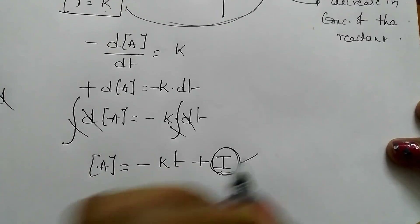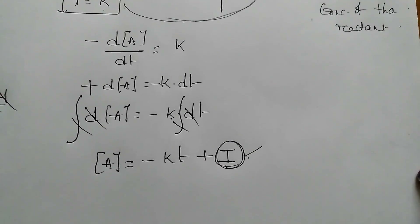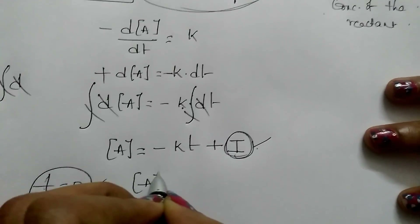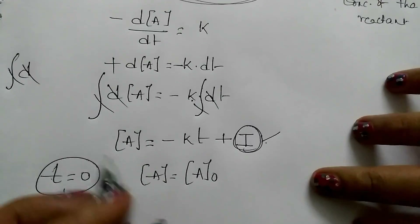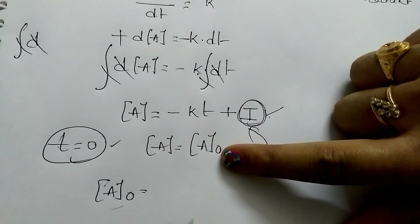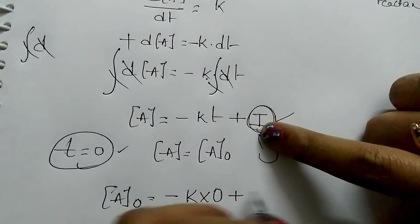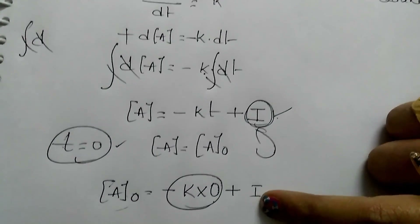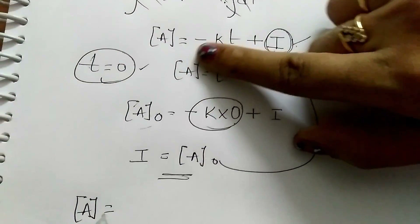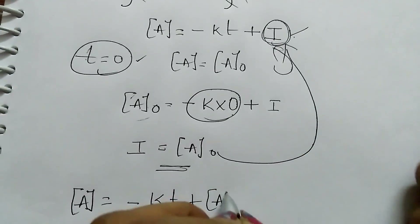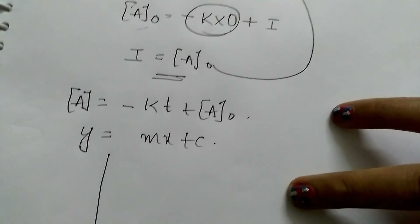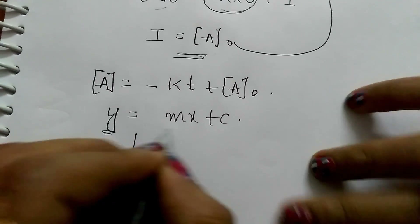To calculate the integration constant I, we use initial conditions: when the reaction has not started, T = 0 and concentration of reactant is A naught. Substituting: A naught = K × 0 + I, so I = A naught. Substituting back, we get [A] = −Kt + A naught.